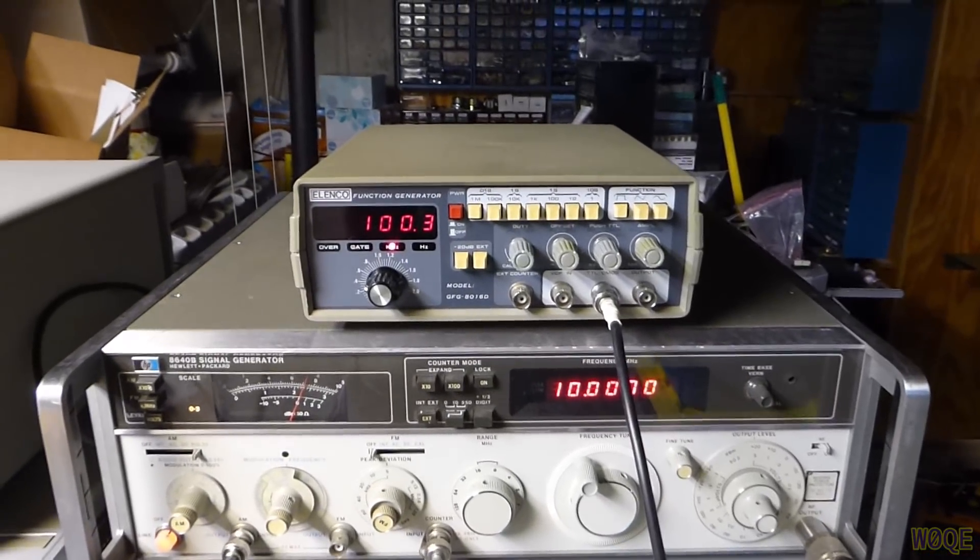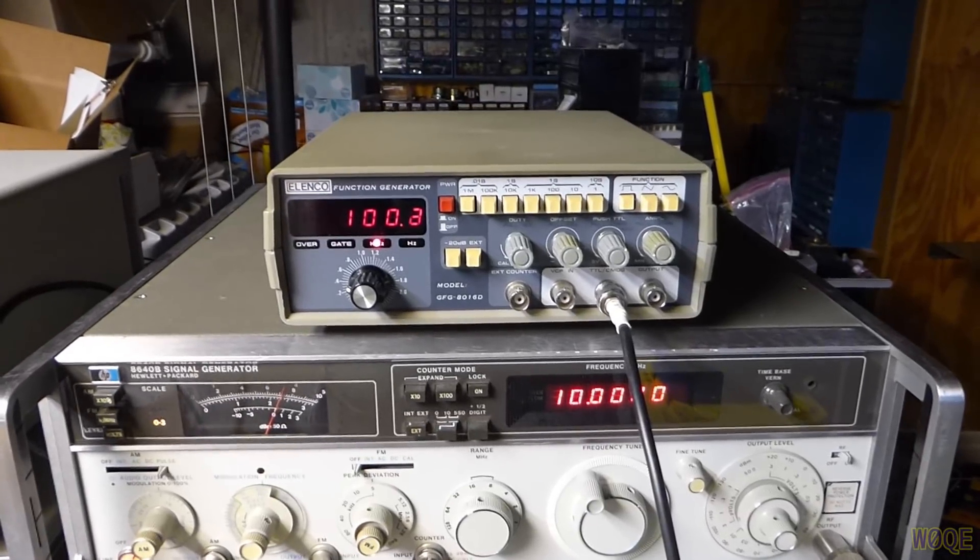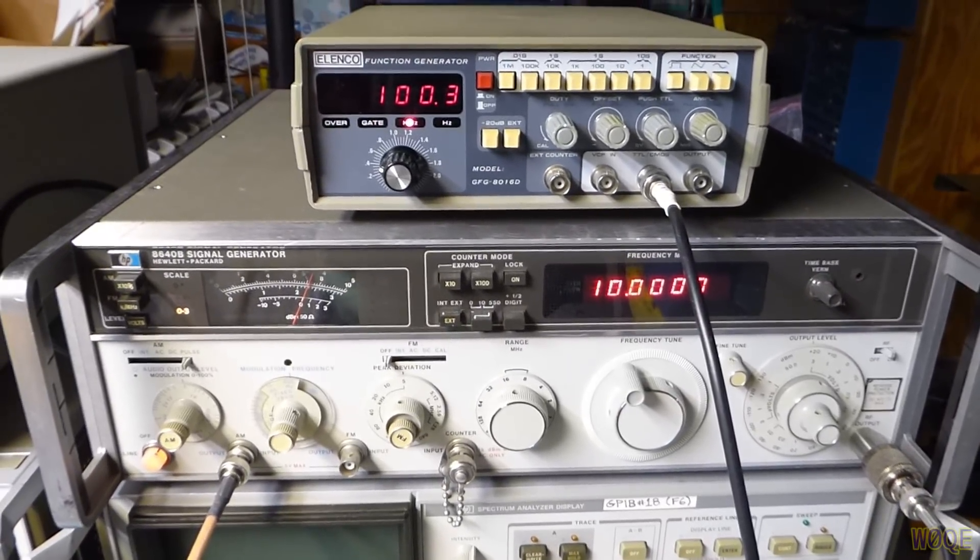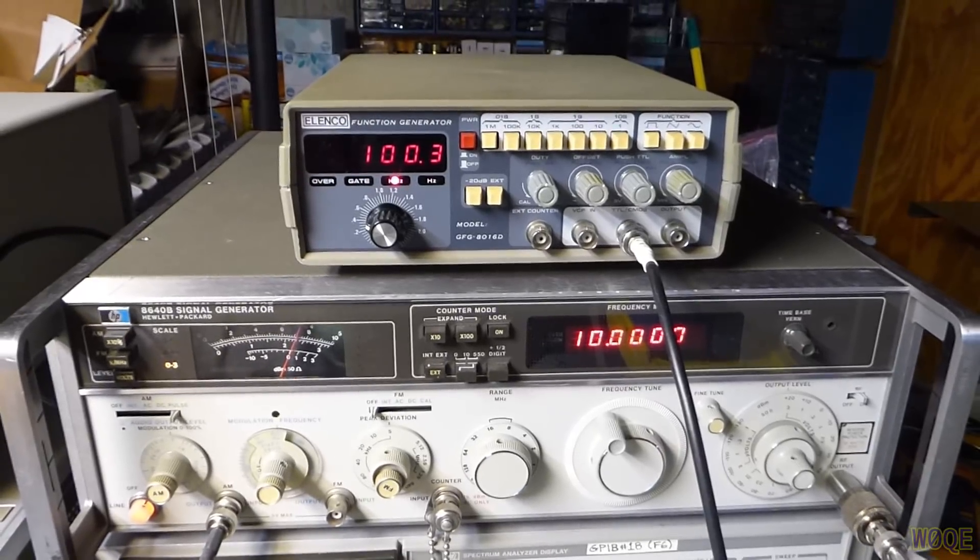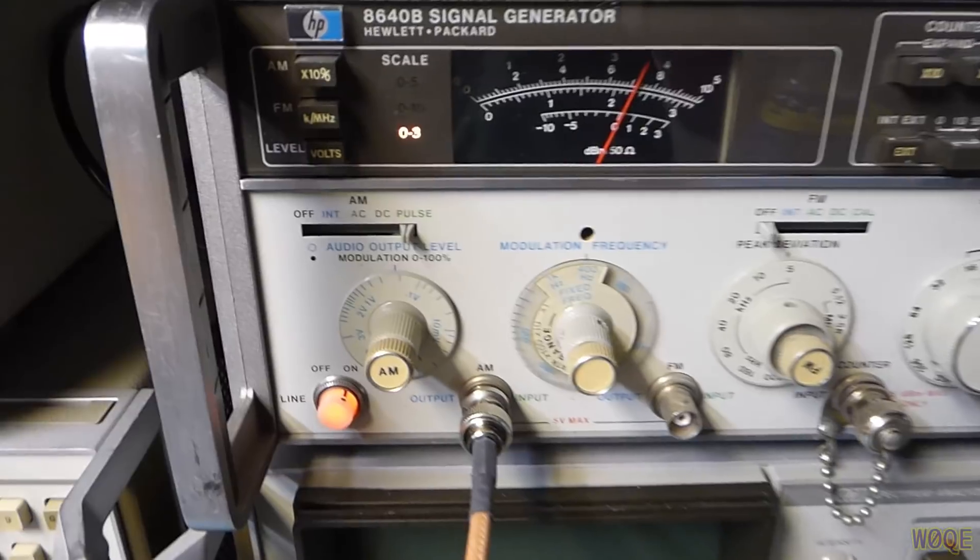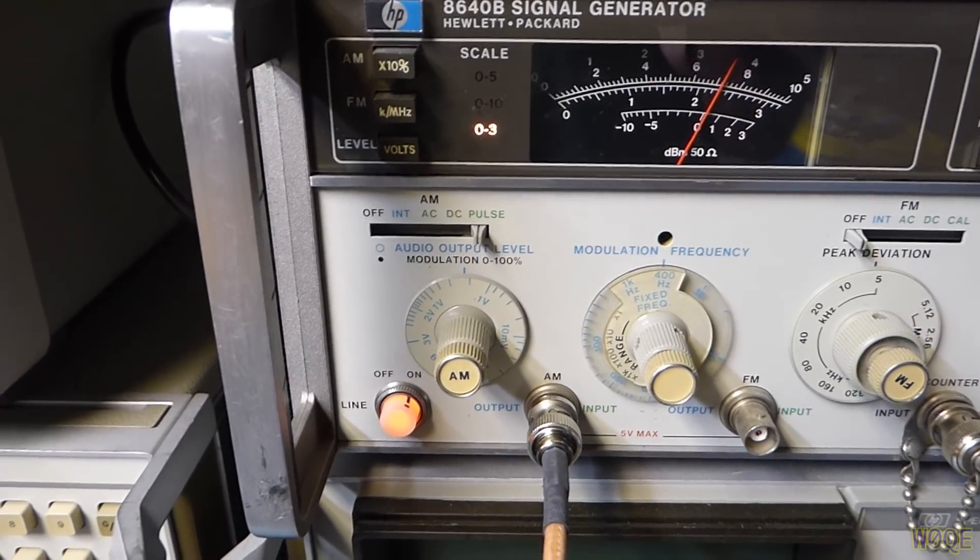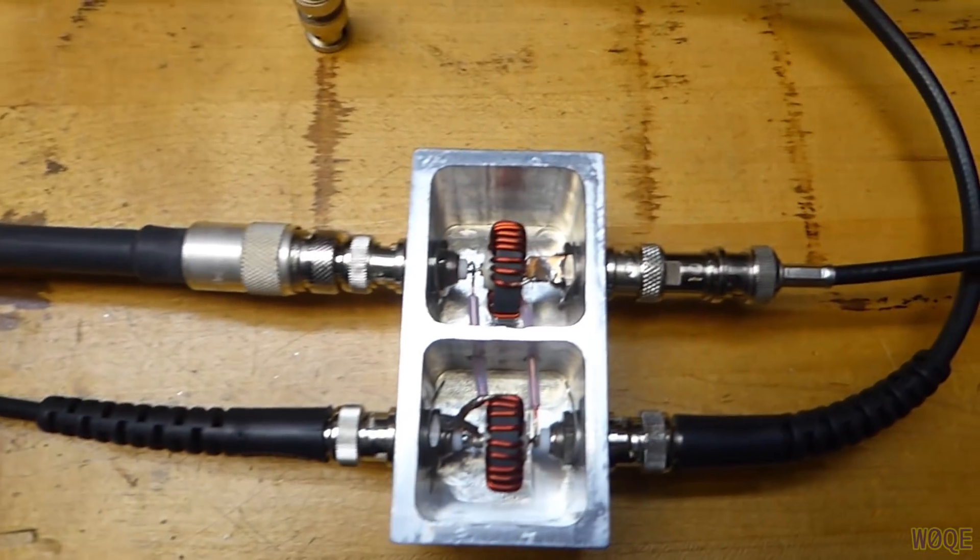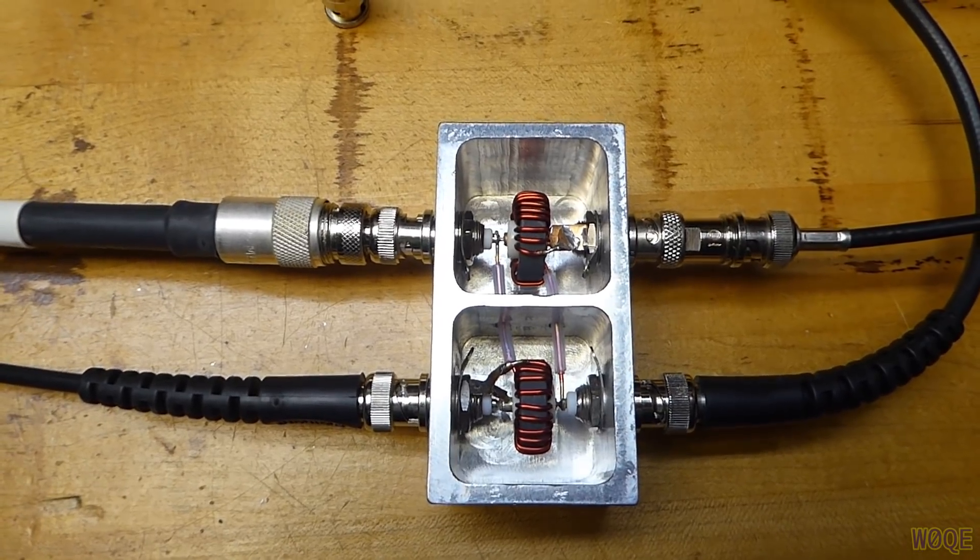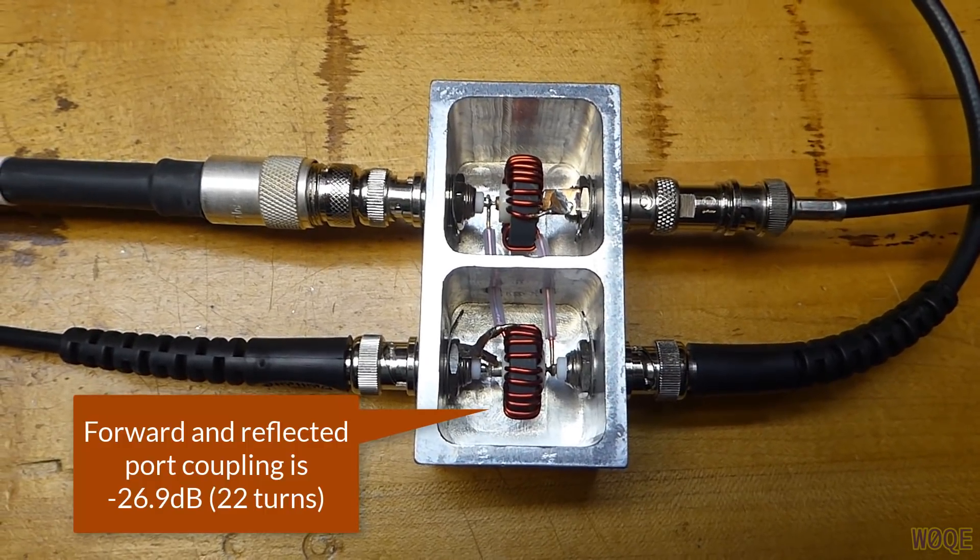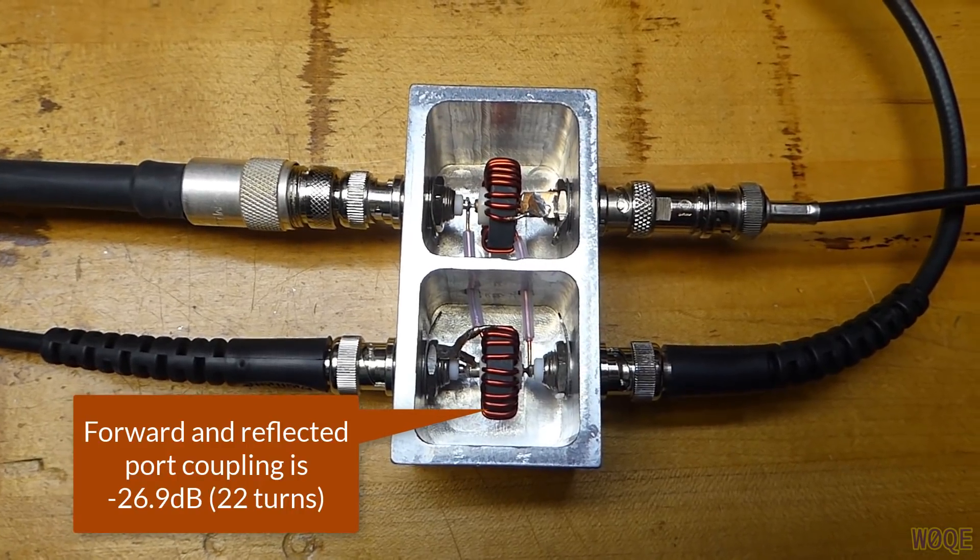The test circuit I used on top is a cheapy function generator that generates the one microsecond pulse, and down below it is an 8640B signal generator. The function generator drives the 8640, and the 8640 is in a mode where it's in its pulse mode, which means basically that the signal can be gated on and off like a CW waveform. And that drives an SWR bridge that I've shown before in various videos. The top right port is the input from the signal generator, the top left port is the output to the antenna, the bottom left port is the forward power, the bottom right port is the reflected power. Those two signals go up to a scope.